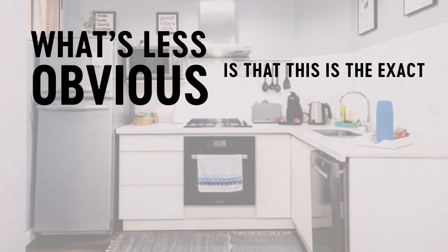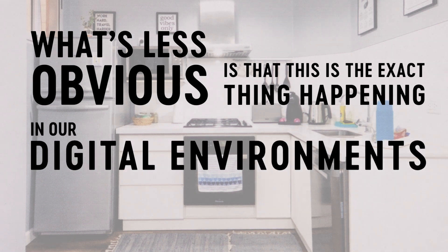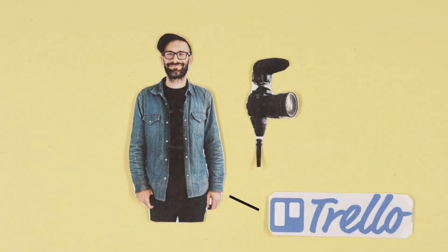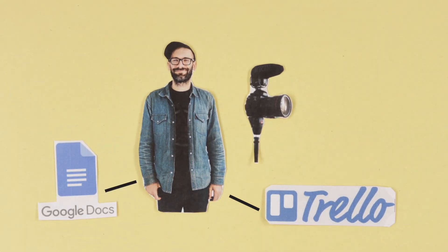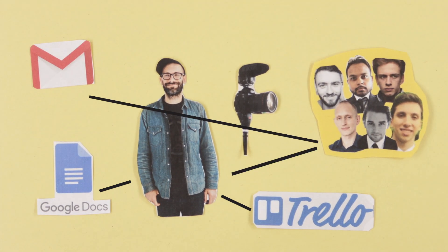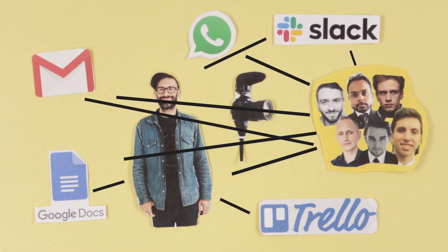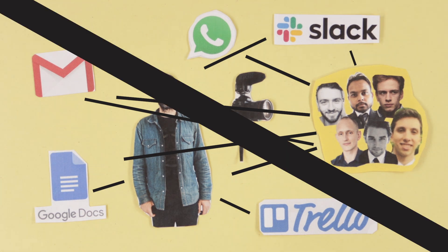What's less obvious is that this is the exact thing happening in our digital environments every day. Let's say you're working on a project like creating a new video. You use Trello to break down tasks and track progress, but you write the script in Google Docs, share revisions back and forth on email, some team members give feedback in Slack, some email comments, someone leaves a note in the Google Doc, and on the weekend someone texts you on WhatsApp with a new idea. Before you know it, the work on this one video is spread all across multiple different apps.